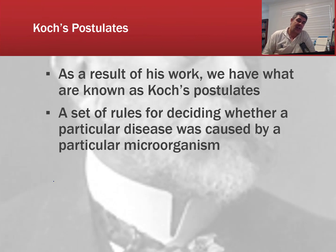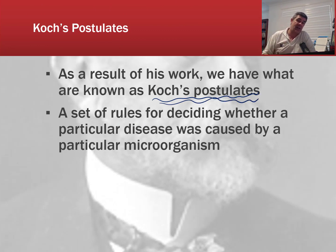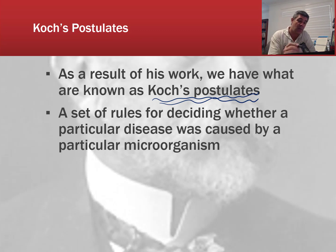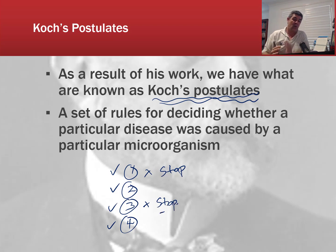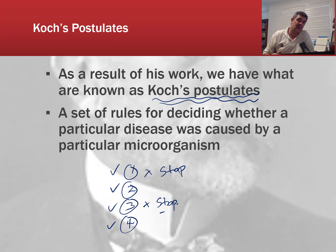As a consequence, we now have what we call Koch's postulates — a very important series of four steps for trying to link a particular pathogen with an infectious disease. You can think of them as a set of rules for deciding whether a particular disease is caused by a particular microorganism. We need four ticks for our four rules; if at any point something doesn't do what we expected, we stop and conclude that the suspected pathogen is not the cause.